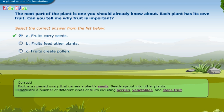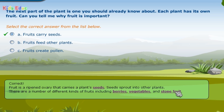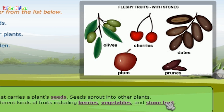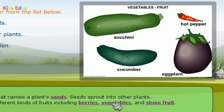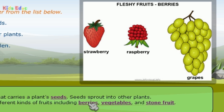Fruit is a ripened ovary that carries a plant's seeds. Seeds sprout into other plants. There are a number of different kinds of fruits including berries, vegetables, and stone fruit. Stone fruits are fleshy fruits with stones, such as olives, cherries, dates, plum, and prunes. Vegetables as fruit include zucchini, hot pepper, cucumber, and eggplant. Fleshy fruits and berries include strawberry, raspberry, and grapes.